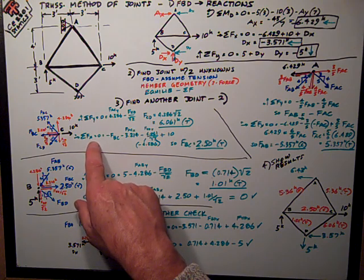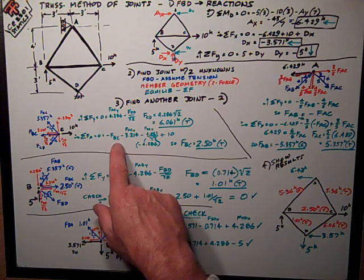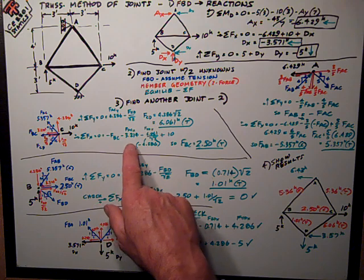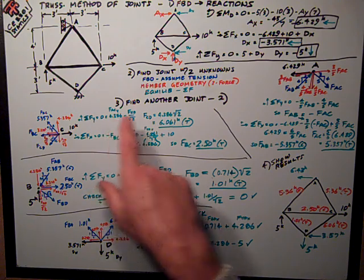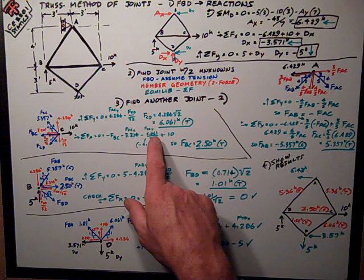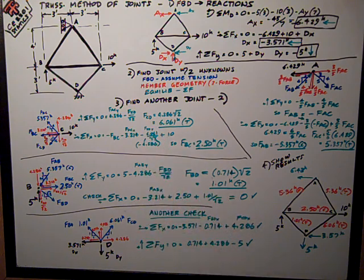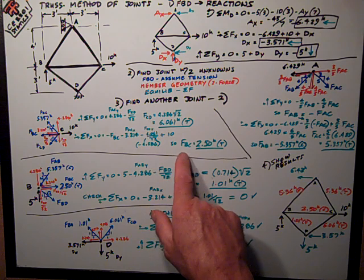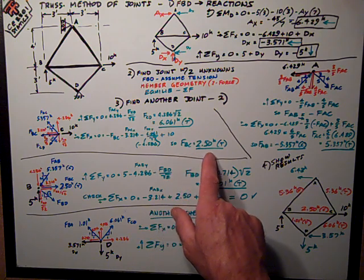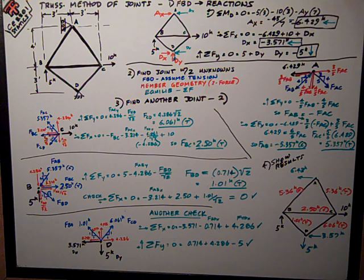Then I do sum of forces in the x direction. Put in the numbers, the unknown FBC. Here's the knowns, one that I took from the other free body, and then this one I just solved for, 6.061 divided by the square root of 2. So FBC works out to be 2.5 positive, which means it's also tension.